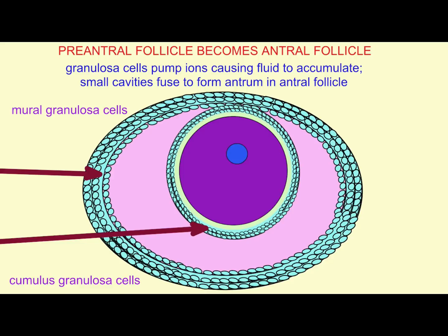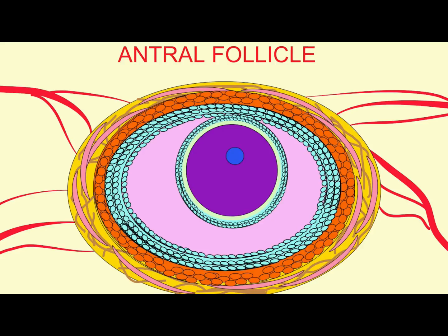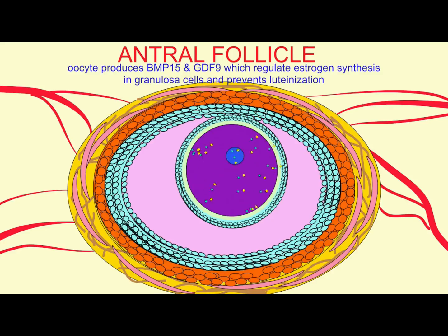These cavities fuse to form a fluid-filled antrum, which then separates the granulosa cells into two layers: the cumulus granulosa cells, which surround the oocyte, and the mural granulosa cells, which form the wall of the follicle.